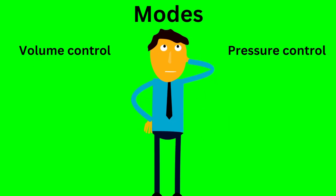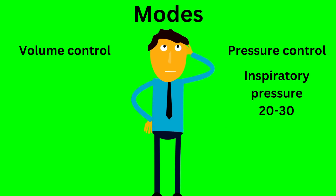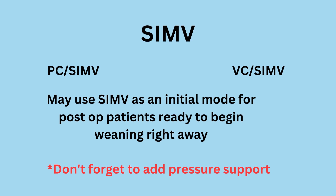Modes are a source of anxiety for a lot of students. The exam will use basic modes: volume control and pressure control. In volume control, you choose the tidal volume and pressure can be variable. If you choose pressure control, you'll need to select an inspiratory pressure — we recommend starting between 20 to 30 cmH2O — and make sure the exhaled tidal volume is appropriate for the patient's predicted body weight.